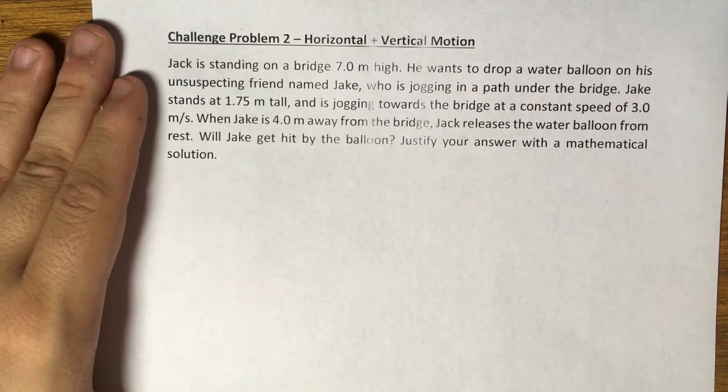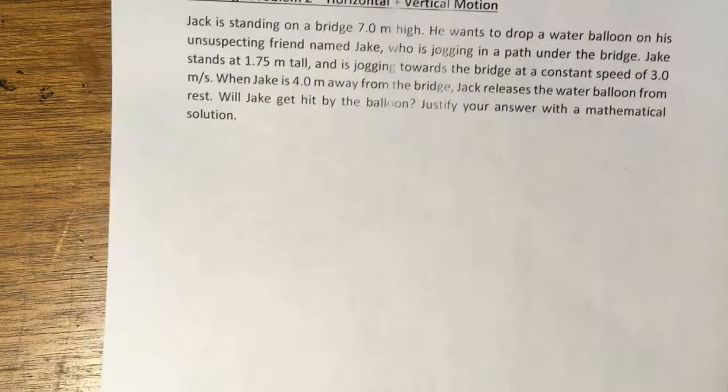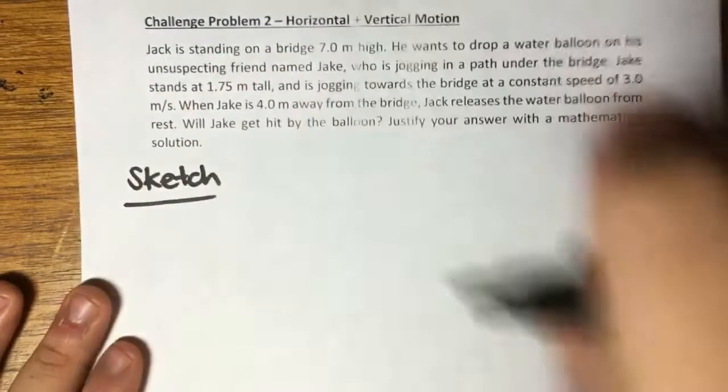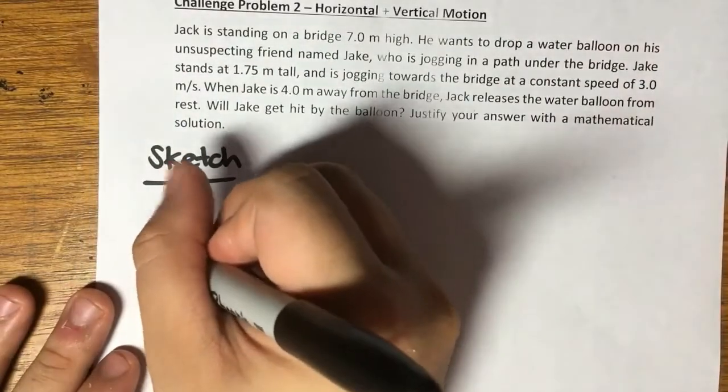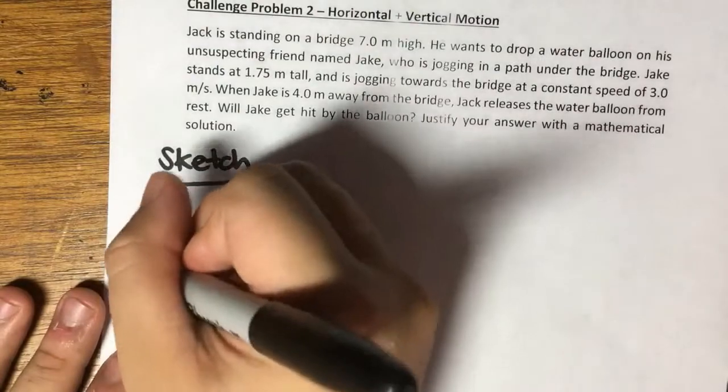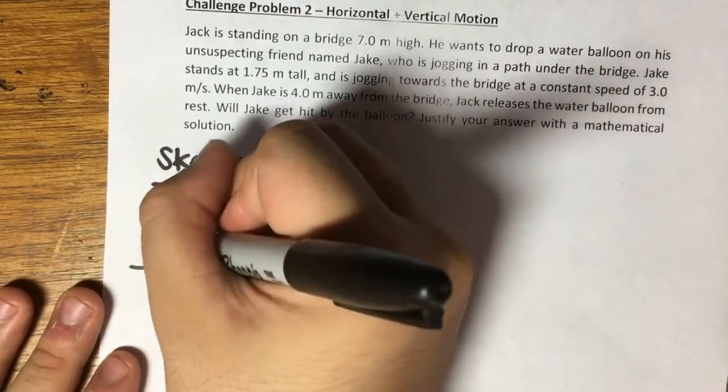When Jake is 4 meters away from the bridge, Jack releases the water balloon from rest. Will Jake get hit by the balloon? Justify your answer with a mathematical solution. Let's try to visualize this using the sketch approach. We know that there's a bridge - I'll just say that this is the bridge right here.